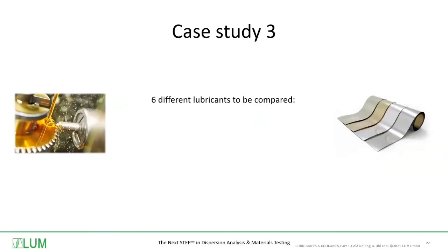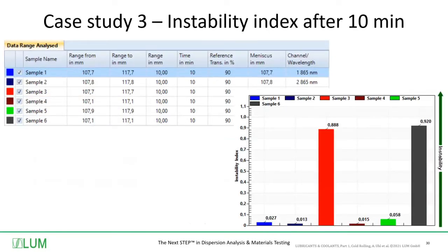Let's come to case study number 3. Six different lubricants were to be compared qualitatively and quantitatively. Looking at the instability index after 10 minutes, we have two samples with very high values: sample number 3 at 0.888 and sample number 6 at 0.920. These two are the most unstable samples, with sample 6 being the most unstable and sample 3 the second most unstable. The other four samples have smaller instability index values and are much more stable.